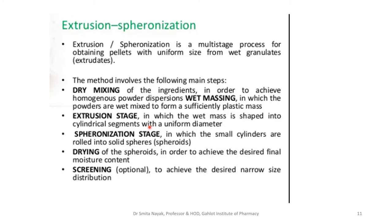So we have a plastic, dough-like mass similar to the one prepared in case of tablet granulation. Once the wet mass is achieved, it is extruded — shaped into tiny cylindrical segments having a uniform diameter as small as 0.5 to 2 mm. The wet mass is divided into long cylinders with a cross-sectional diameter of around 1 to 2 mm. The dough is extruded into small cylindrical segments which are further converted into spheres in the spheronization stage.